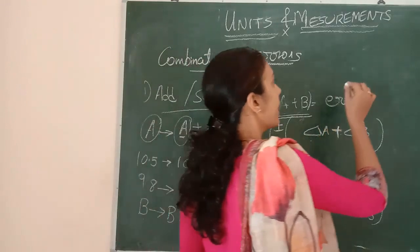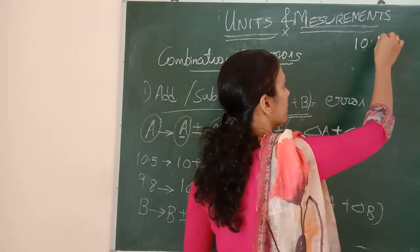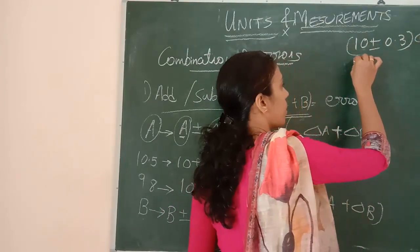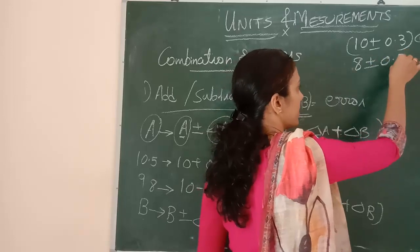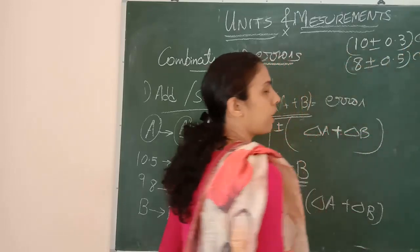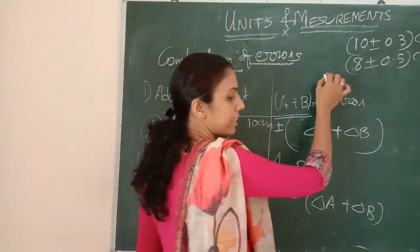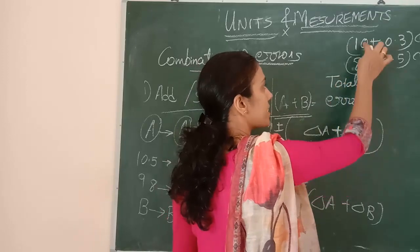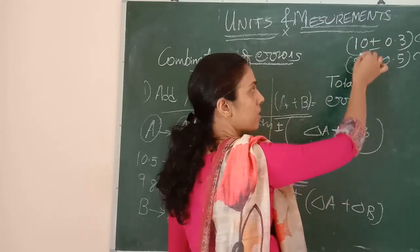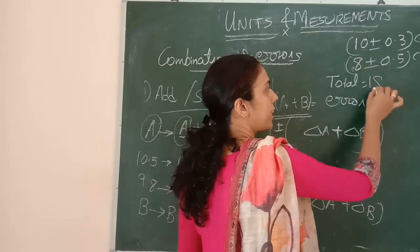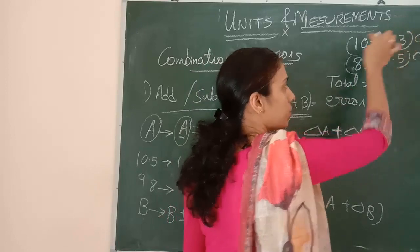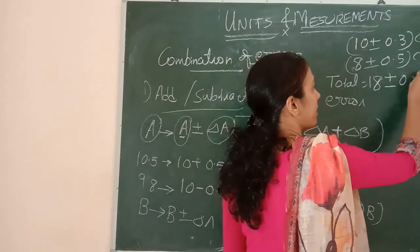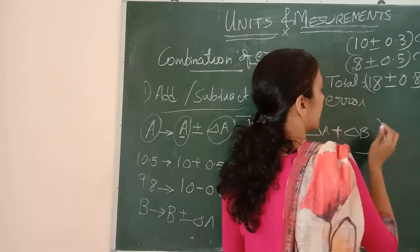Suppose I have a rod of 10 plus or minus 0.3 centimeter and another rod of 8 plus or minus 0.5 centimeter. What is the total length? Total length means 10 plus 8 equals 18. For the errors, they add up: plus or minus 0.3 plus 0.5 equals plus or minus 0.8. So the total length is 18 plus or minus 0.8 centimeter.